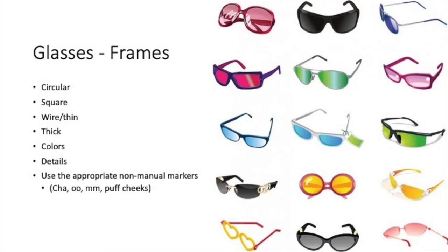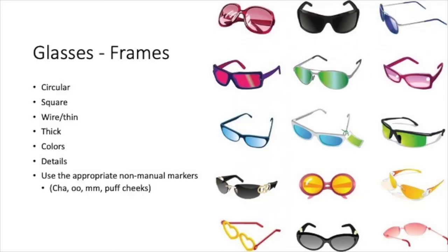We also use DCLs to describe the frame type of eyeglasses. Use a bent L handshape around your eye socket to indicate the shape and size of the frames. Use your pinky finger to trace thin or wire frames. Use a G handshape to indicate thick frames. Be sure to include other details of the glasses as well: colors, lens type, and amount of wear and tear.